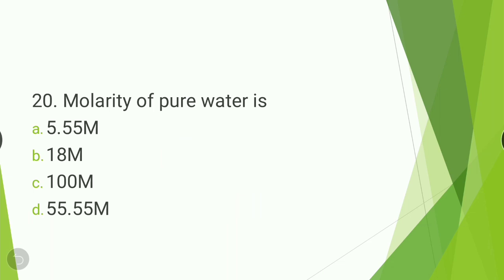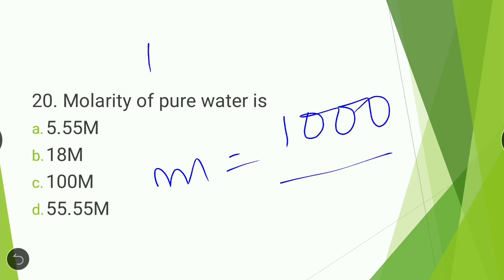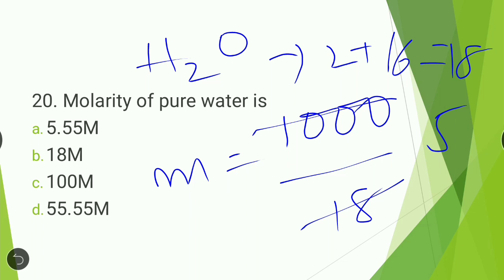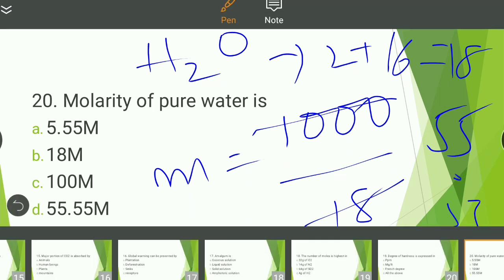Next question: molarity of pure water. Calculating molarity: for one liter of pure water, weight of H2O = density × volume = 1000g. Molar mass of H2O = 2 + 16 = 18. So molarity = 1000/18 ≈ 55.55 molar. The molarity of pure water is 55.55 M.